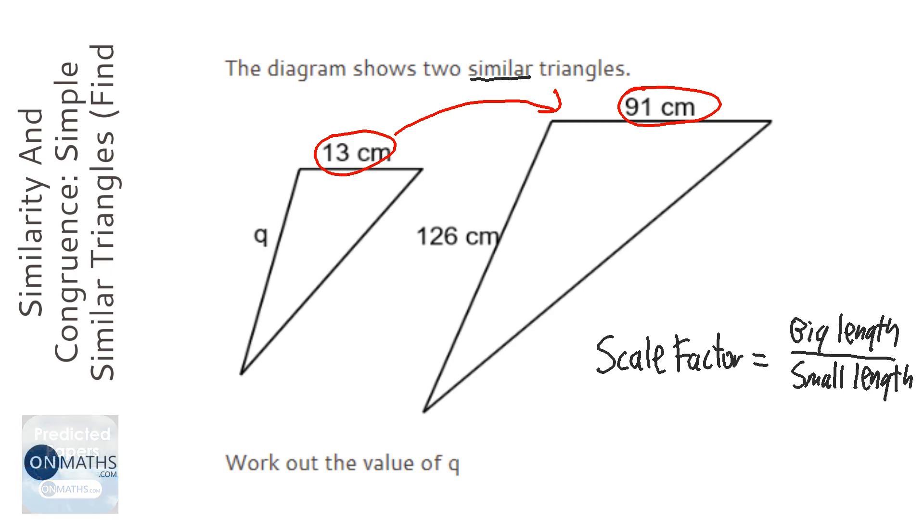Okay, so big length is going to be 91, small length is going to be 13, because those are two corresponding lengths. It means they're both at the same place; we're assuming these triangles haven't been rotated, which they haven't for this question. So 91 divided by 13 is going to be 7, so our scale factor for this question is going to be 7.